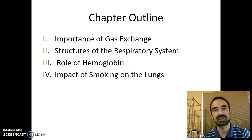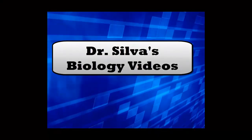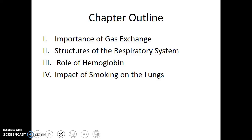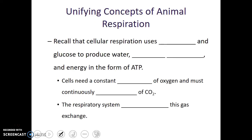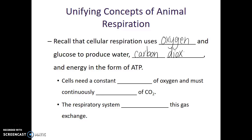In this video we're going to talk about the respiratory system and the importance of gas exchange in the body. Recall that cellular respiration uses oxygen gas and glucose to produce water, carbon dioxide, and energy in the form of ATP. So this means that our cells need a constant supply of oxygen and must continuously dispose of CO2.